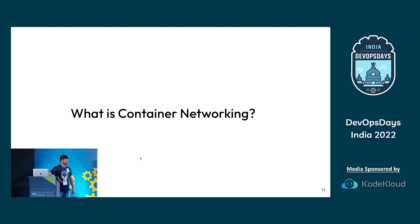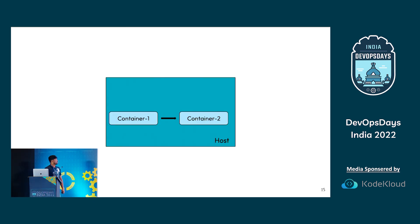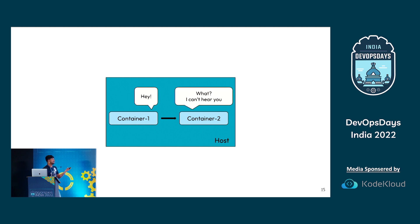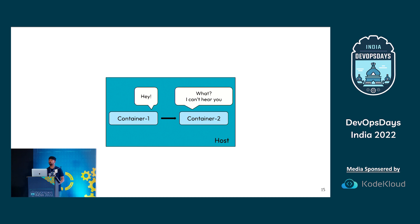What is container networking? Suppose I have a host and two containers. Container one needs to send some packets or data to container two, but container two cannot listen because there is no networking set up between them. Container networking basically deals with how containers can communicate with each other while still running in isolation — how we establish connectivity between them.